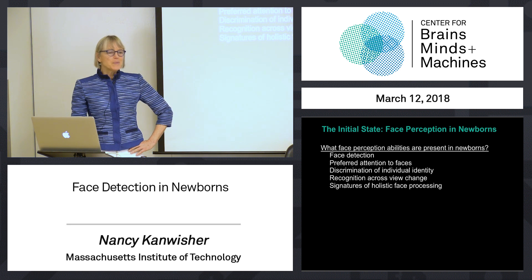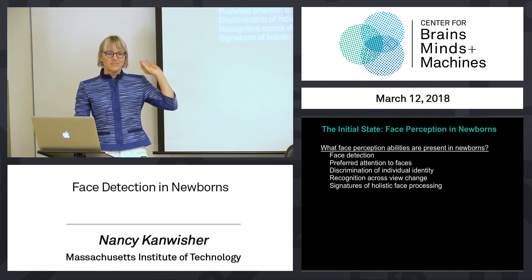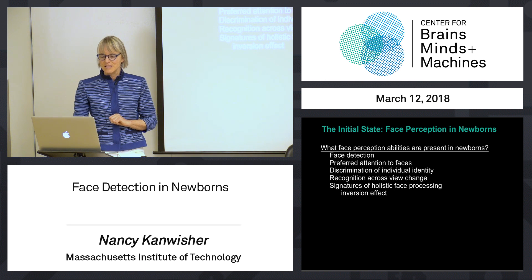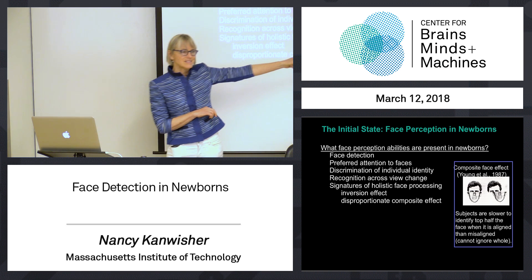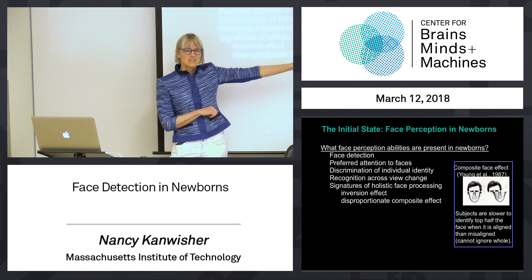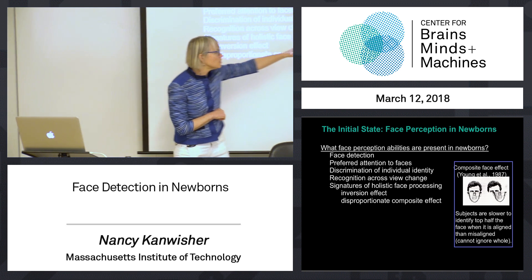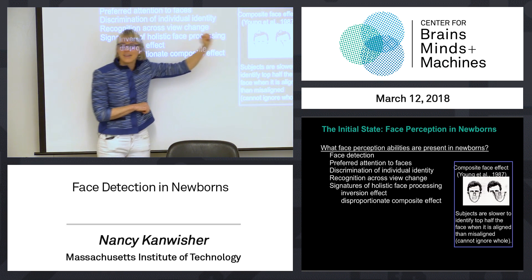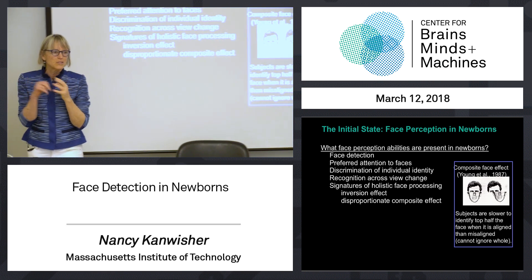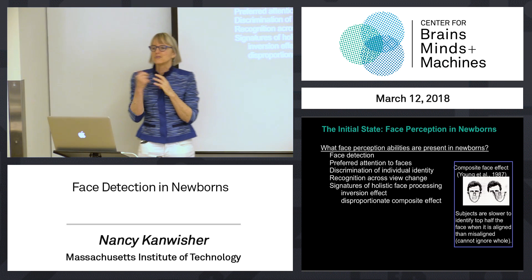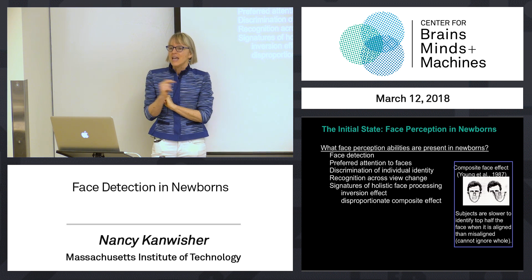And then we brought up a few weeks ago all these other particular signatures of face processing in adults, like the inversion effect, and like the composite effect. Remember — people like to process faces as wholes, so that if you ask them to identify just the top of the face, they're worse at that when it's aligned than misaligned, because their face system wants to process the whole.